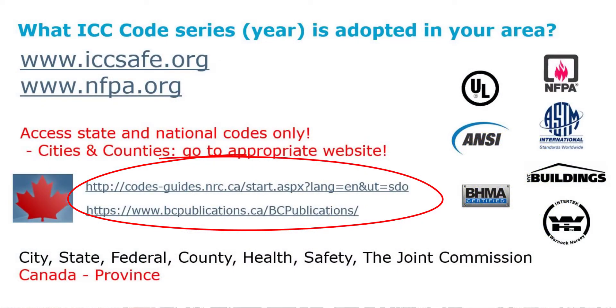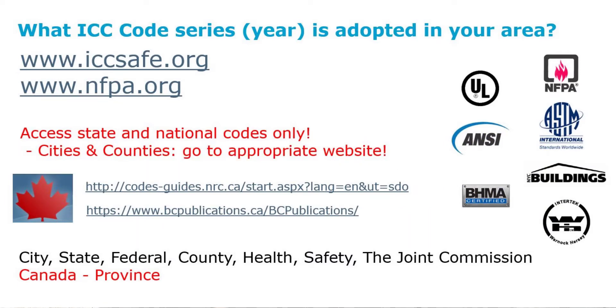For International Building Codes, you can see all the codes from basically the inception of ICC — which is the late 90s — all the way up to the current codes, including IBC 2021, mechanical codes, electrical codes, plumbing codes, and all the others. If you're in Canada, you can also gain access to the codes there to read as well. The codes are free to read, so we can't claim we don't know what the codes are or that we don't have access.